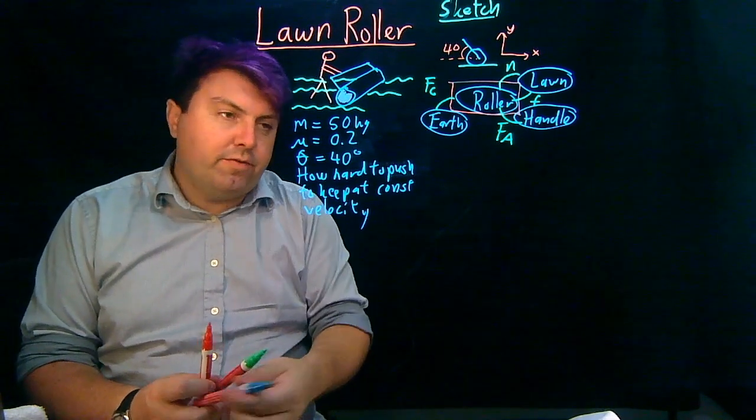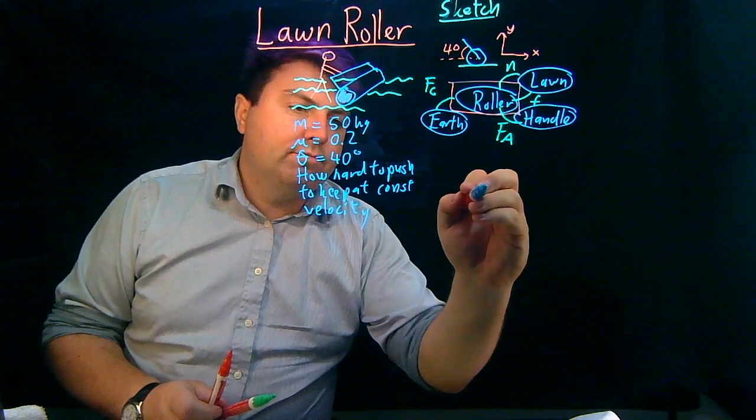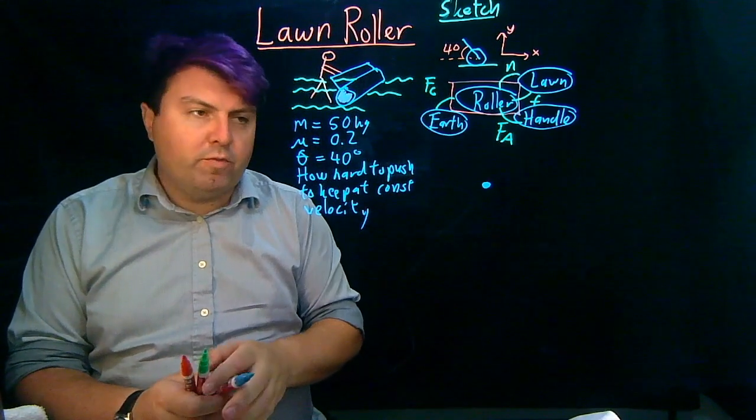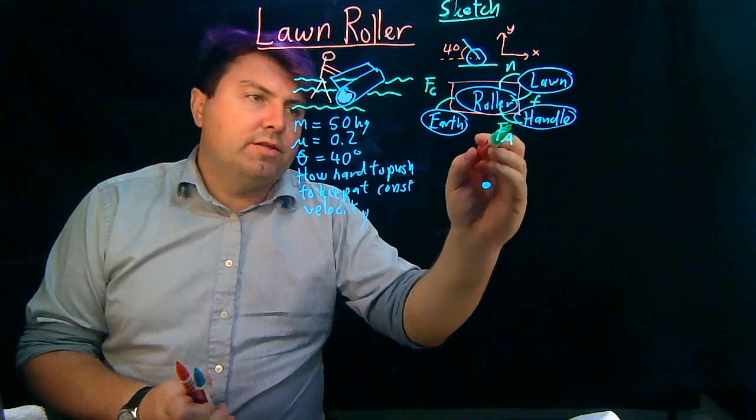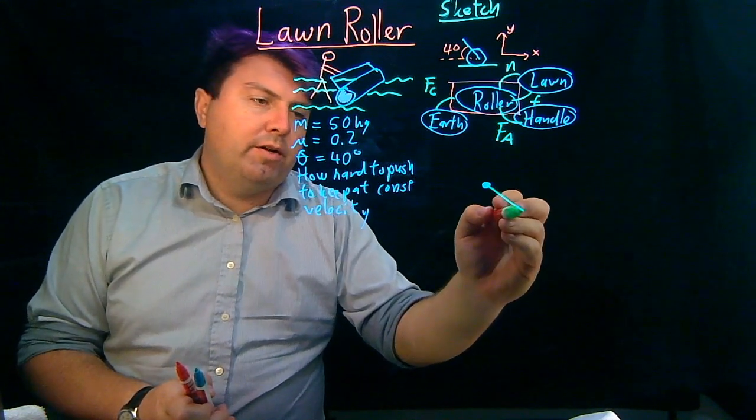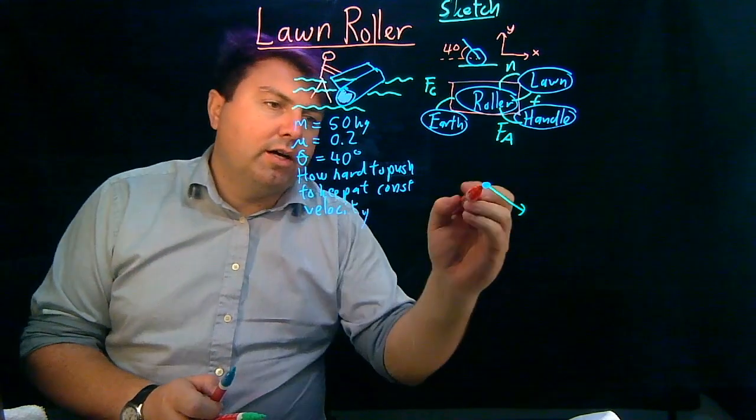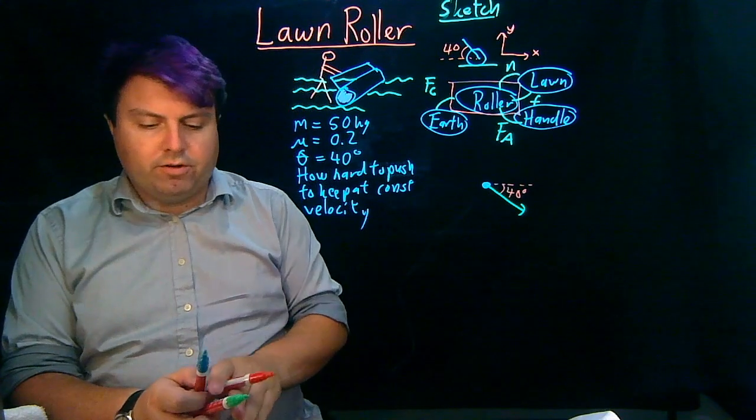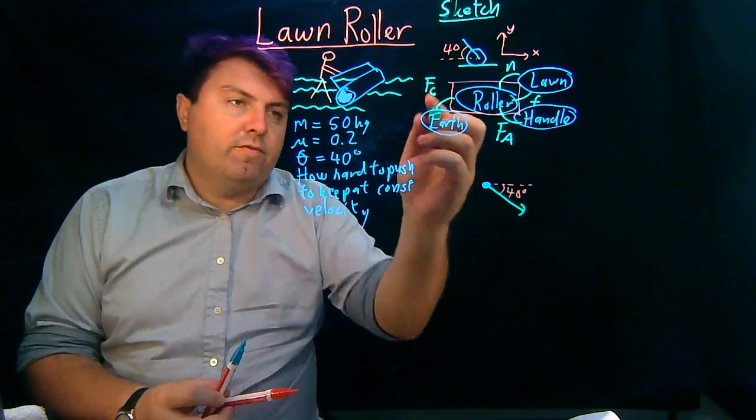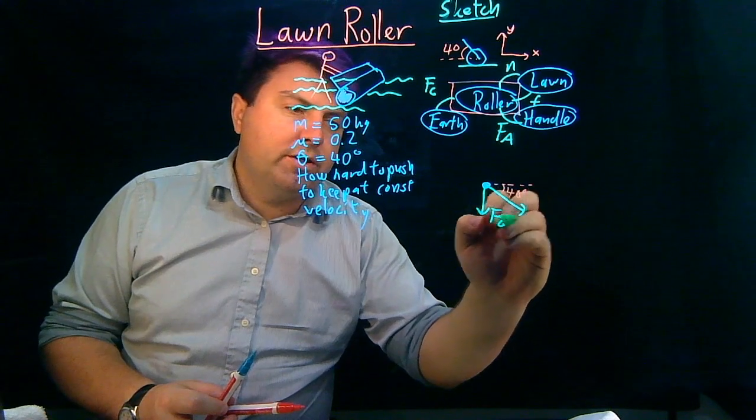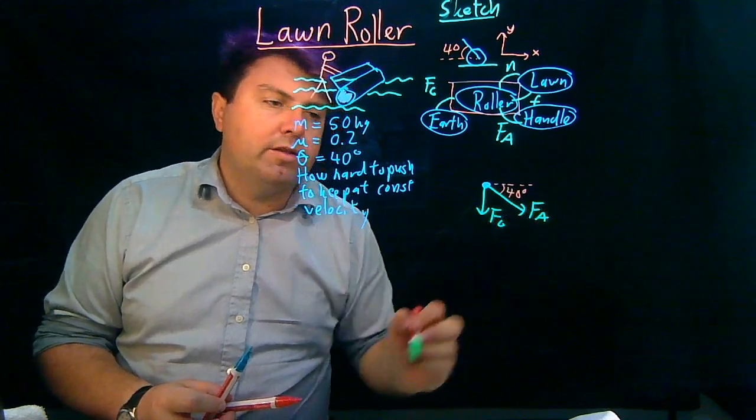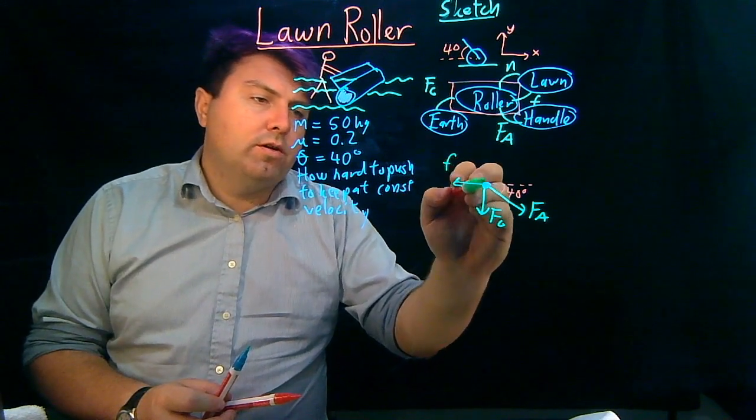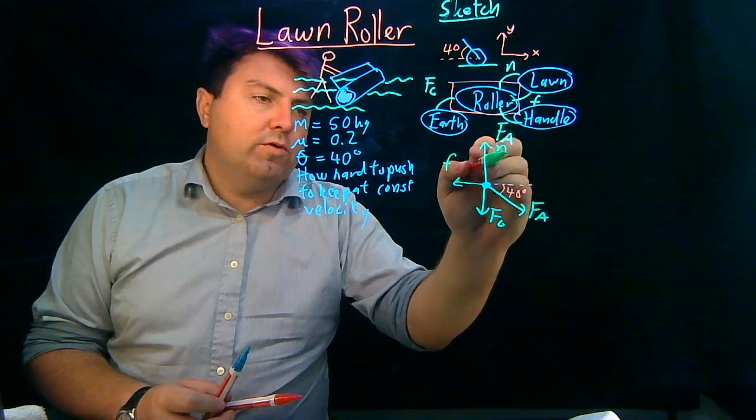So next is our free body diagram. So we're going to read off of our interaction diagram with what forces we have. So we have this force applied, and we know that it's being applied at this angle of 40 degrees, so that it's actually right 40 degrees below the horizon. We have our force of gravity that's pushing down in this way. And we have our force of friction and our normal force.